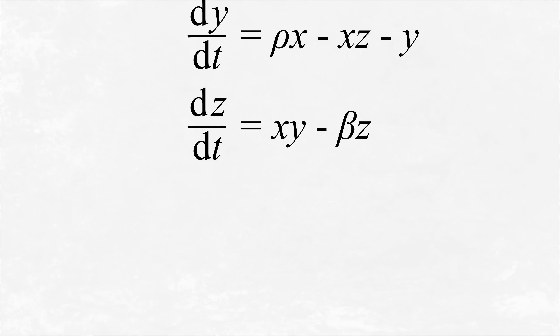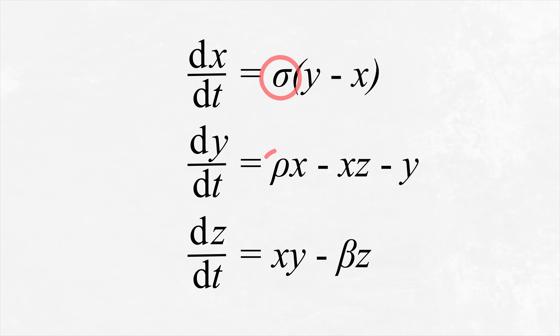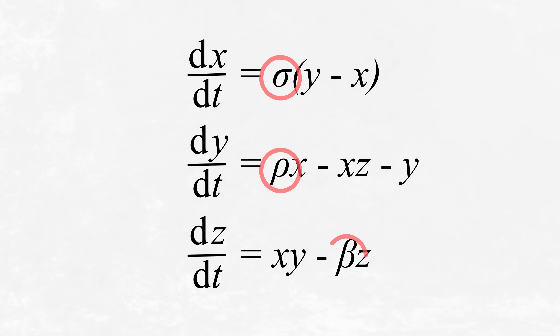How that happens depends on these other parameters, which are proportional to the Rayleigh number, the Prandtl number — fundamental ideas in fluid mechanics — and how tall or fat the convection rolls are.